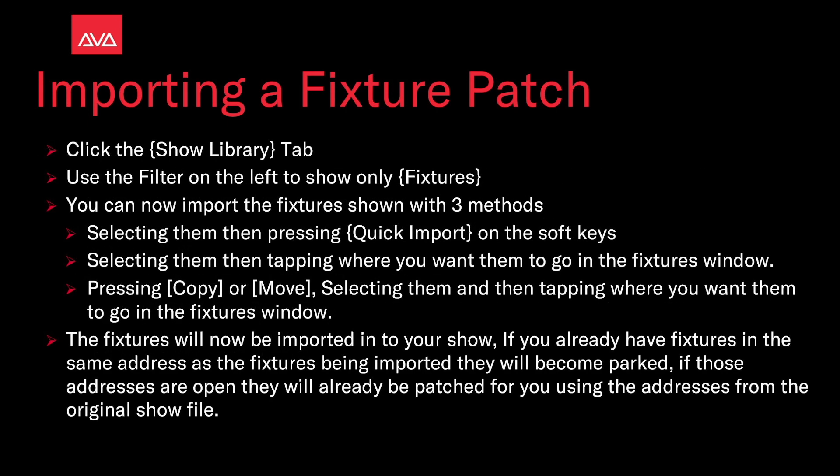Then click the Show Library tab. We use the filter on the left to show only fixtures. We can import the fixtures shown with three methods: selecting them and pressing Quick Import on the soft keys; selecting them and tapping where you want them to go in the fixtures window; or pressing Copy or Move, selecting the fixtures, and then tapping where you want them to go in the fixtures window.